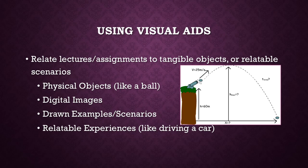Using visual aids refers to relating lectures and assignments to tangible objects or relatable scenarios. When in class, try to demonstrate what is being taught or use a picture or even draw your own examples. The same goes for assignments — try to provide visuals for students to relate to. When I teach physics, I try to always draw out problems, usually involving a car or a sport or something else relatable, like this cannonball problem. I even include drawings like these on the tests because it makes the problem relatable.